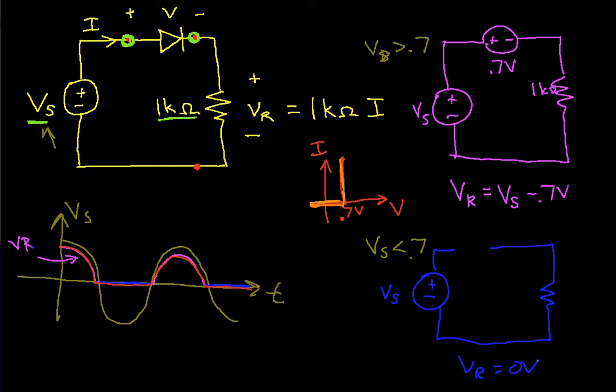Hopefully that makes the half-wave rectifier fairly clear and helps you understand how to analyze a circuit with a diode. Basically, you look at the diode: if the voltage across it would be greater than its threshold voltage, you treat it as a voltage source equal to the threshold voltage. If the voltage across it is going to be negative, you treat it as an open circuit.